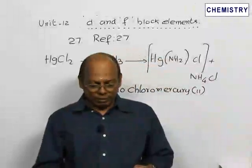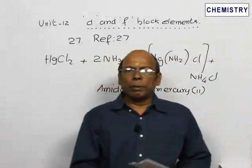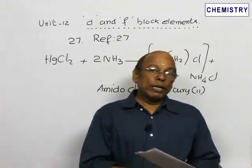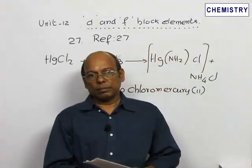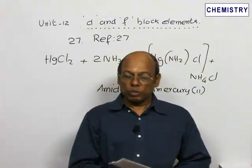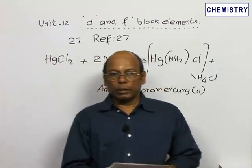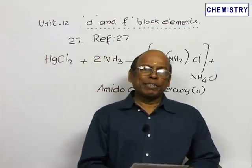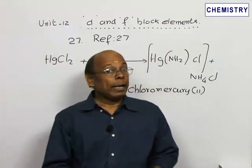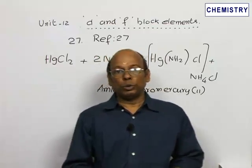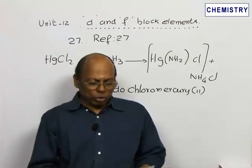Refer question 27. It's about a compound of mercury. Mercury has two different oxidation states: +1 and +2. The compound mercurous chloride has the expected formula HgCl, but it is actually a dimer, Hg₂Cl₂. It is also called calomel.